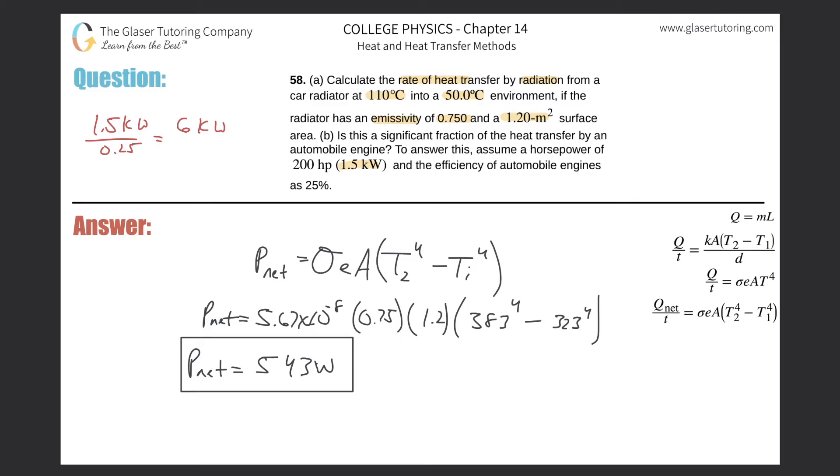That's why it's only 25% efficient. The remaining is just being lost as heat. Therefore, 75% of this number here is 4.5 kilowatts, and this is what's being generated in heat.